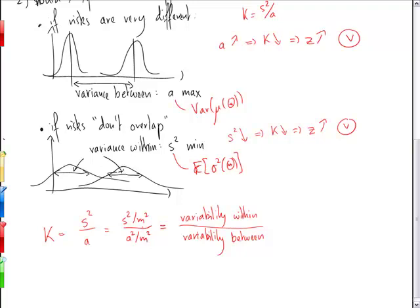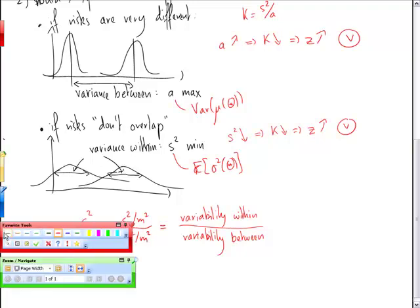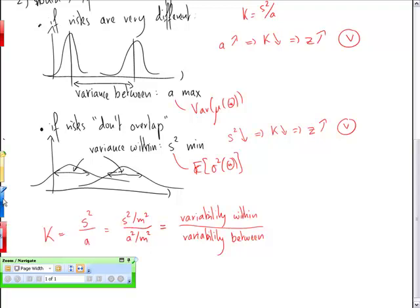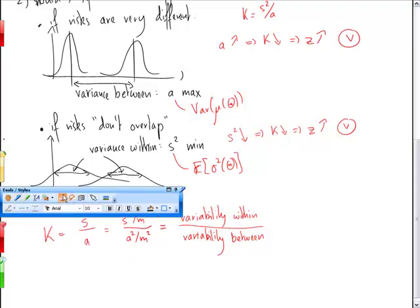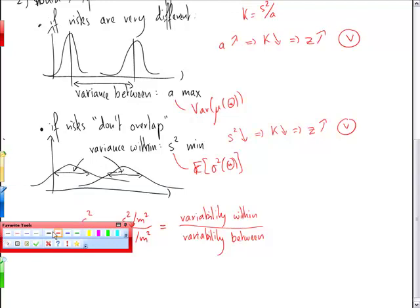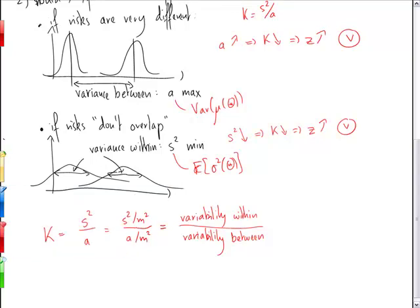So here you really have a coefficient of variation. This ratio here is the variance of mu of theta over the expected value of mu of theta squared. So this is really a coefficient of variation of the variability between.